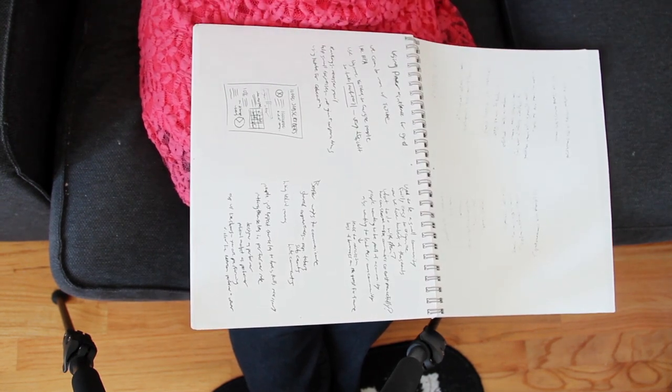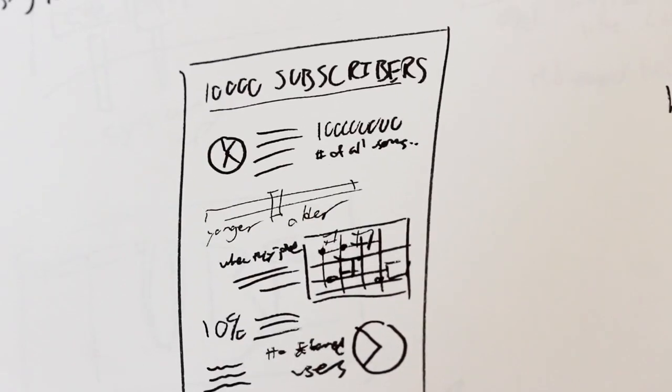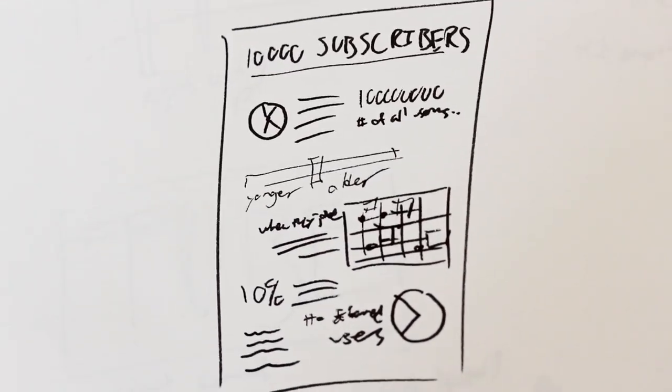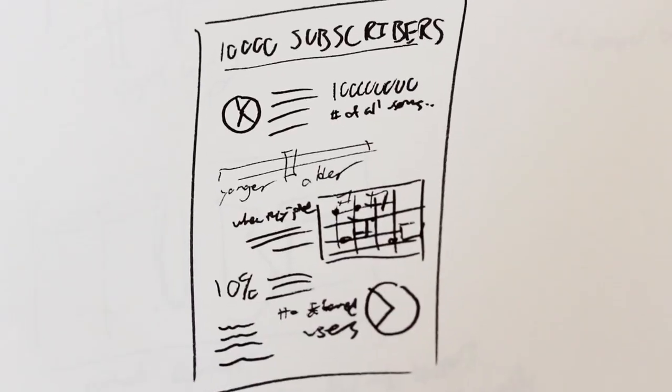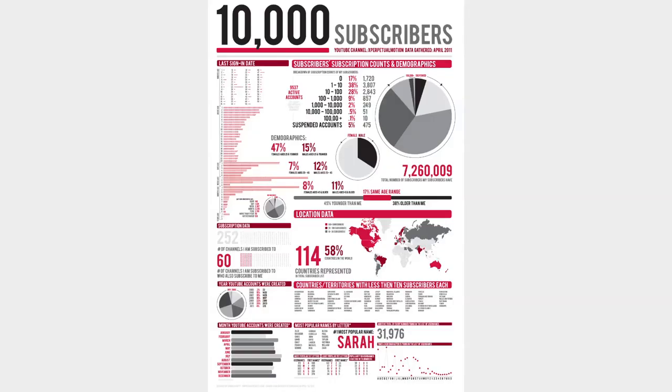So now we get to the one part of that thesis project I actually really like how it came out, and that is my 10,000 subscribers poster. This is my initial sketches of that. That was when Sam Reg downloaded all this data about my subscribers, and I made an infographic poster about it, so that was fun.